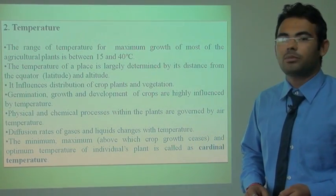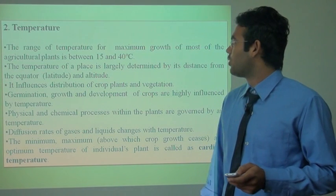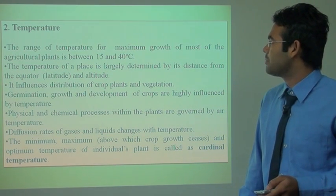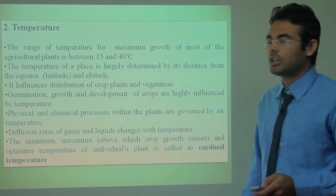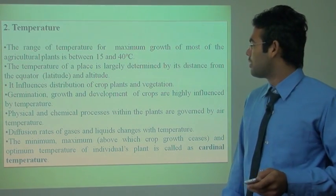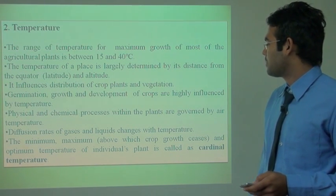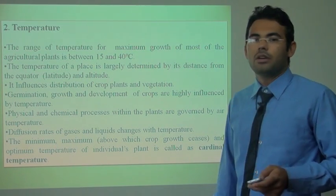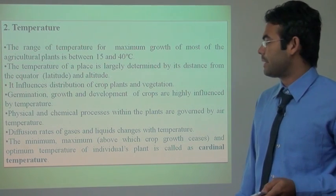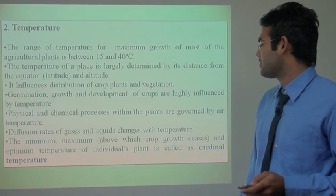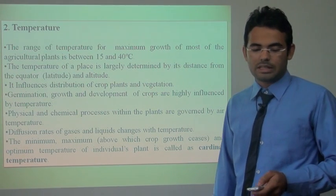The second climatic factor is temperature. In most agricultural crops, maximum growth occurs between 15 to 40 degrees centigrade. The temperature of a place is largely determined by latitude and altitude, and it influences the distribution of crops, plants and vegetation. Germination, growth and development of crops are highly influenced by temperature. Physical and chemical processes like transpiration, evaporation and photosynthesis depend on temperature and air circulation. The minimum, maximum and optimum temperatures of individual plants are called cardinal temperatures.